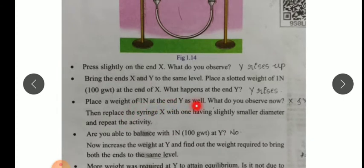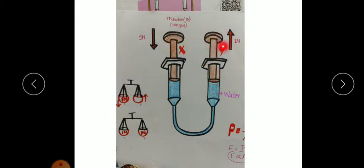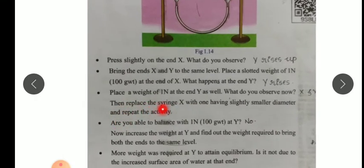Next, place a weight of 1 Newton at end Y as well. We already kept 1 Newton on X; now we keep the same 1 Newton on Y also — so 1 Newton on both pistons. What do you observe now? This piston will not move upwards or downwards because we kept 1 Newton on both pistons — they are balanced. So write: X and Y are balanced. After that, replace syringe X with one having a slightly smaller diameter and repeat the activity.